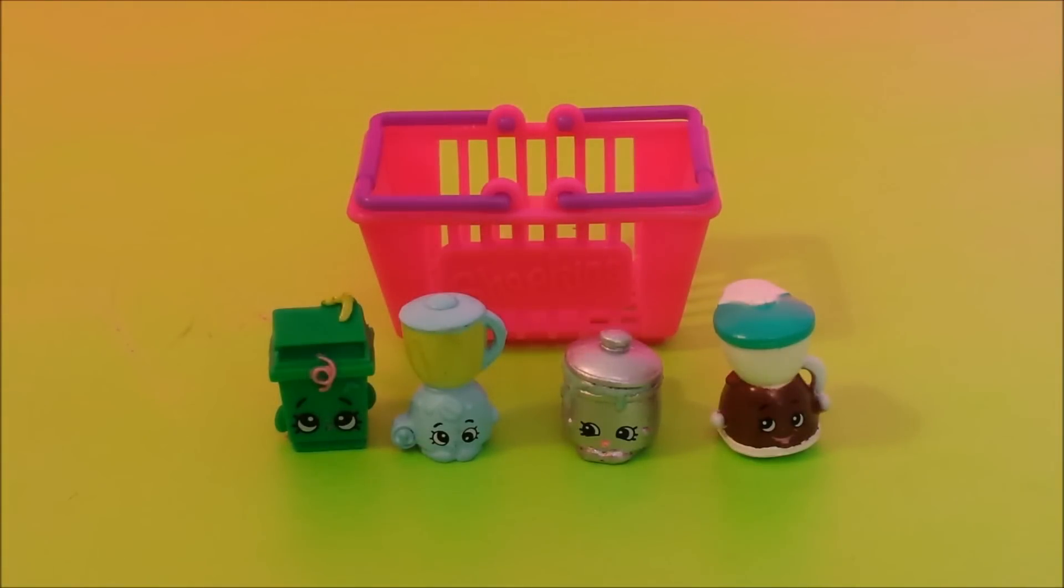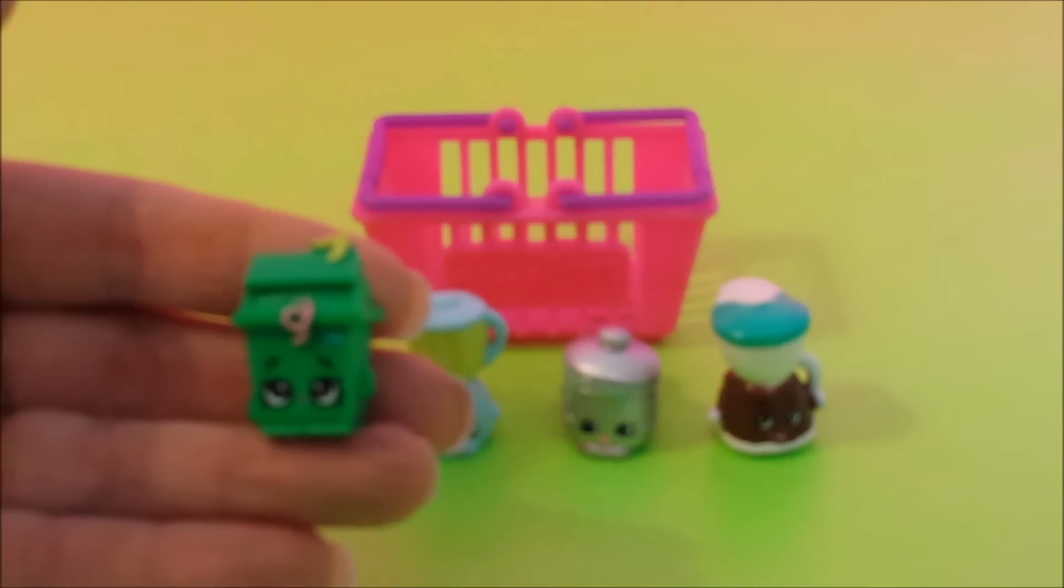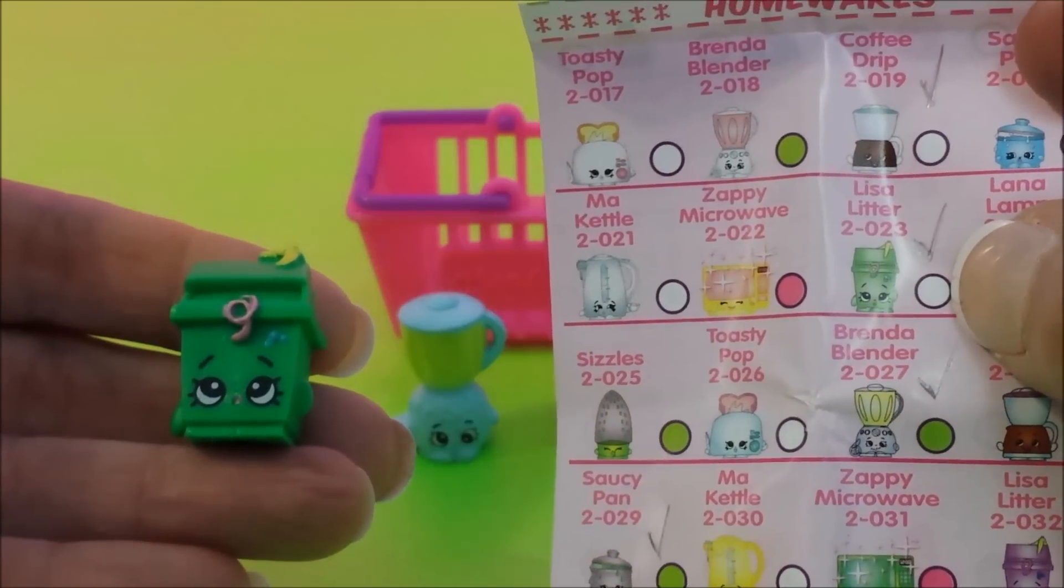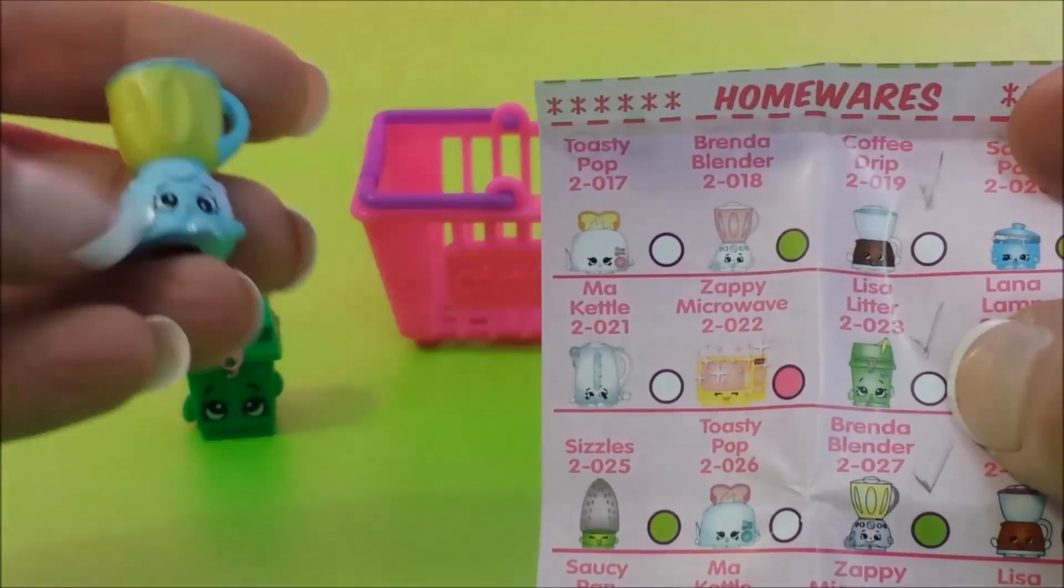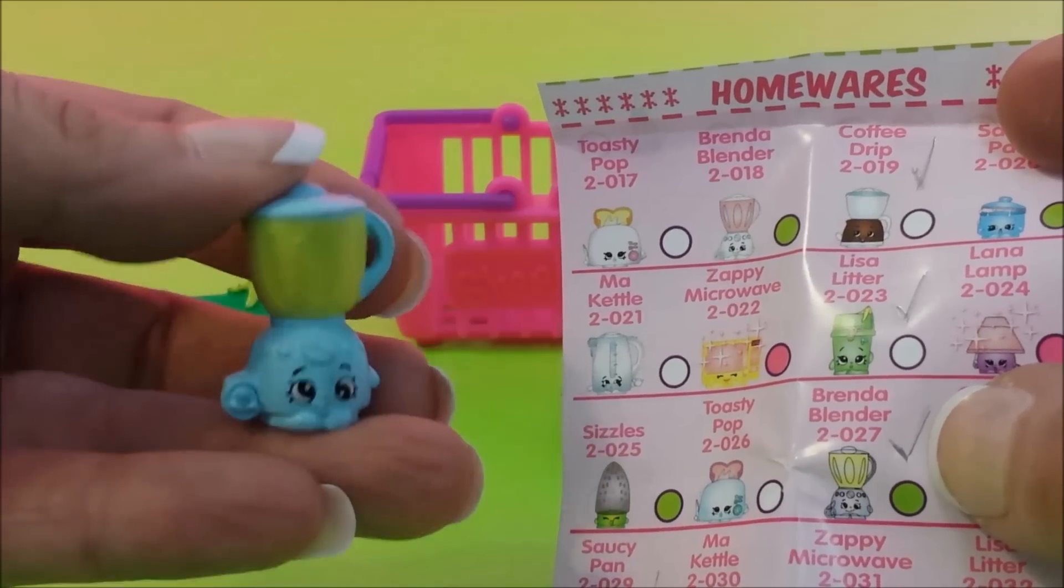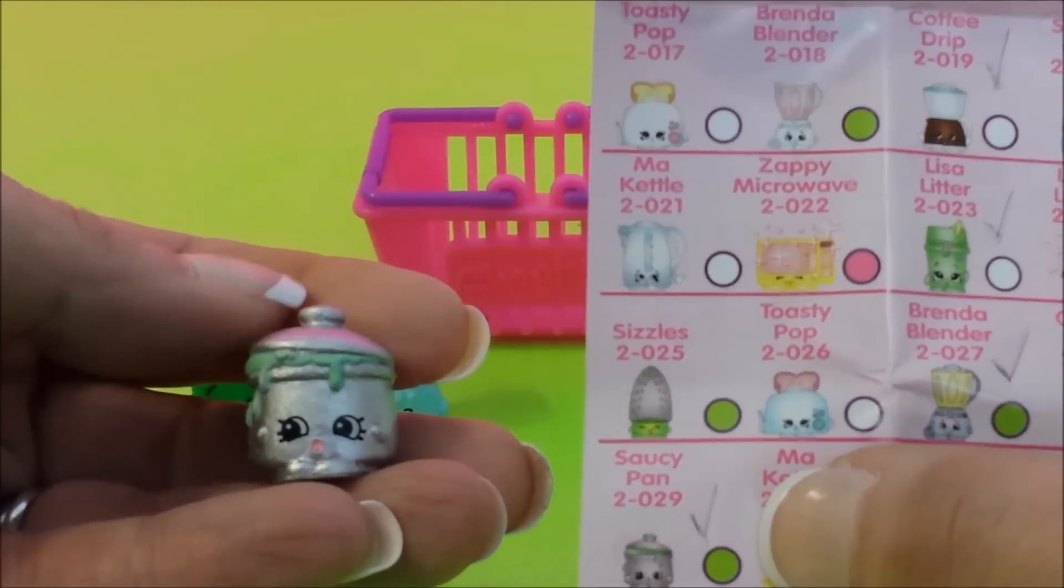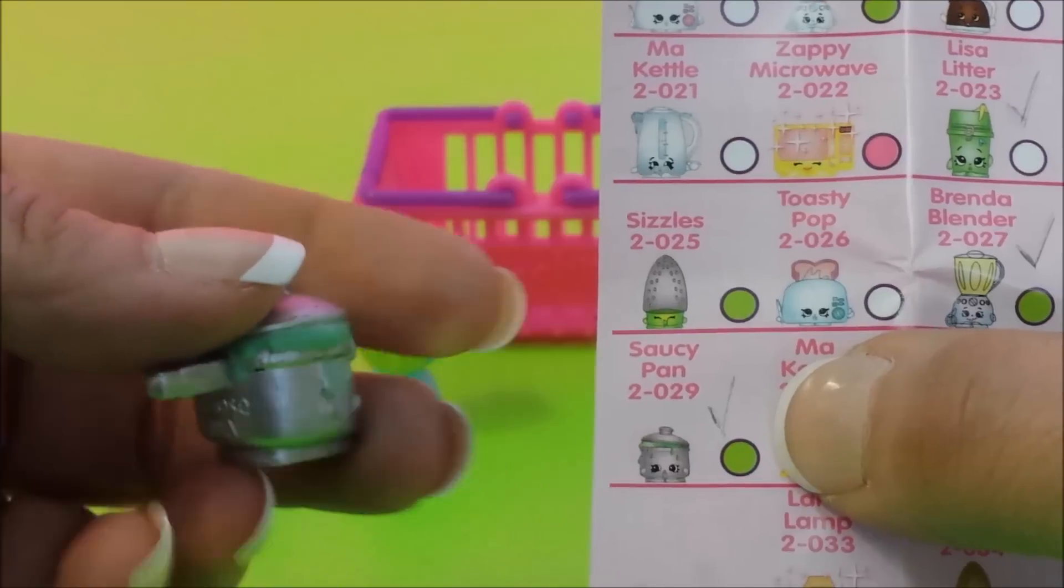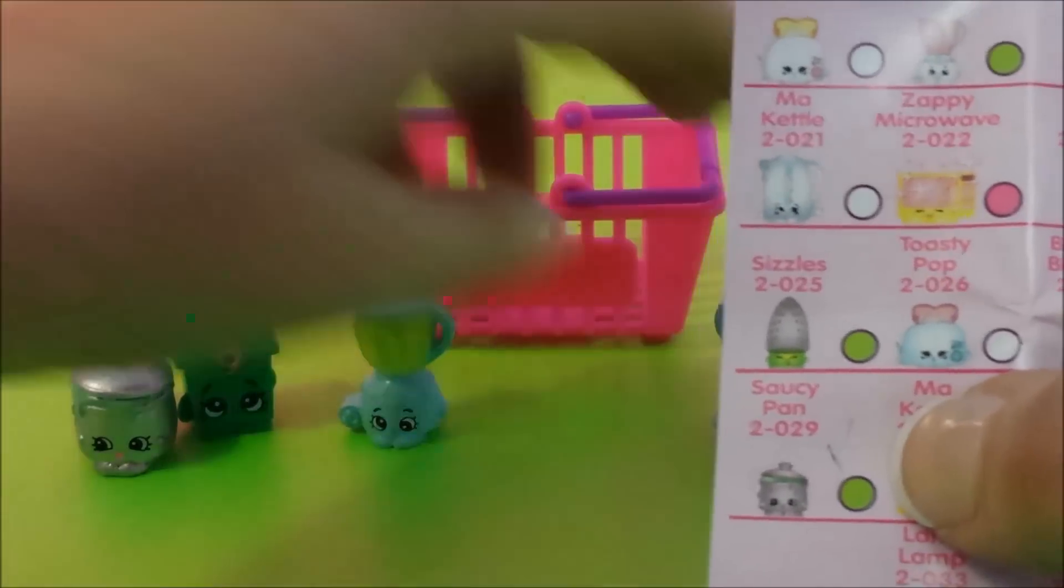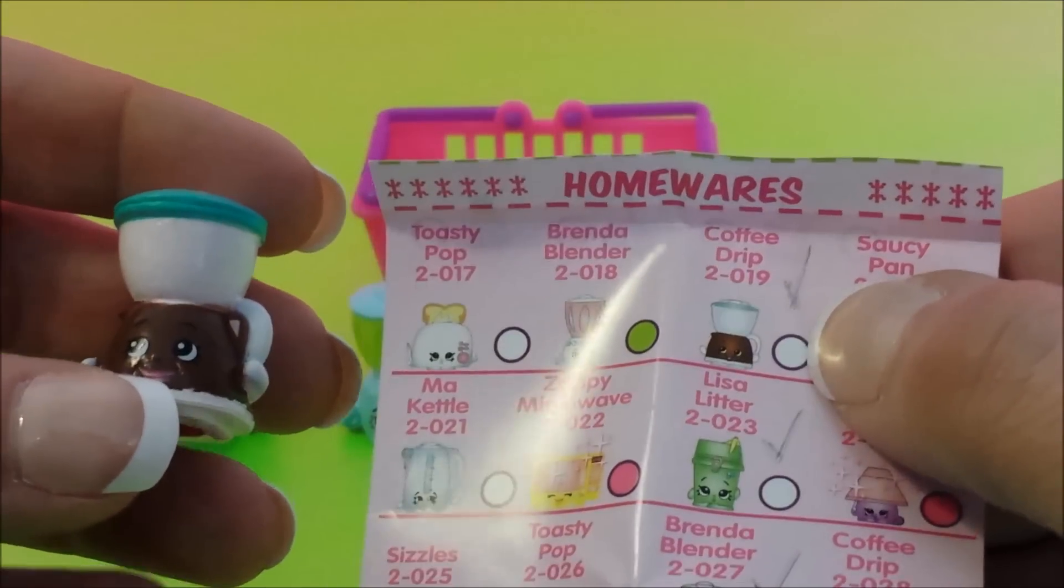All right guys, first up in our first basket we have the housewares. The first one we got is Lisa Litter. She is from the housewares and she is actually a common. Here she is on the sheets and she's a common. The next one we got is Brenda Blender and she's a rare. She's so cute. Next one up on our list is Saucy Pan and that one is a rare. She's got stuff dripping out of her pan. Next one up on our list is Coffee Drip and this one is a common.